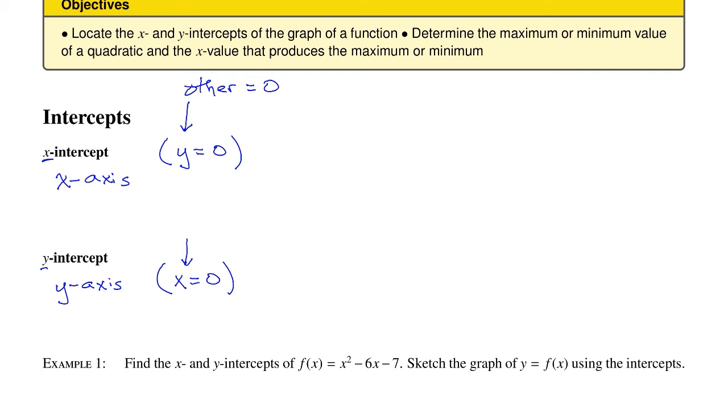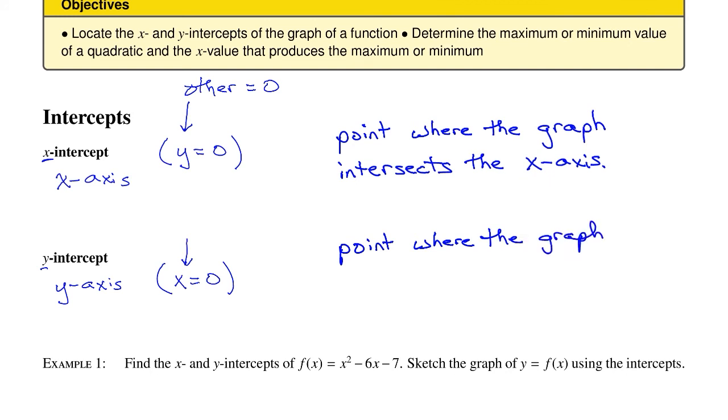So let's write out these definitions completely. So the x-intercept is the point where the graph intersects the x-axis. And the y-intercept is the point where the graph intersects the y-axis. And both of these will be important in their own right when we start doing applications.